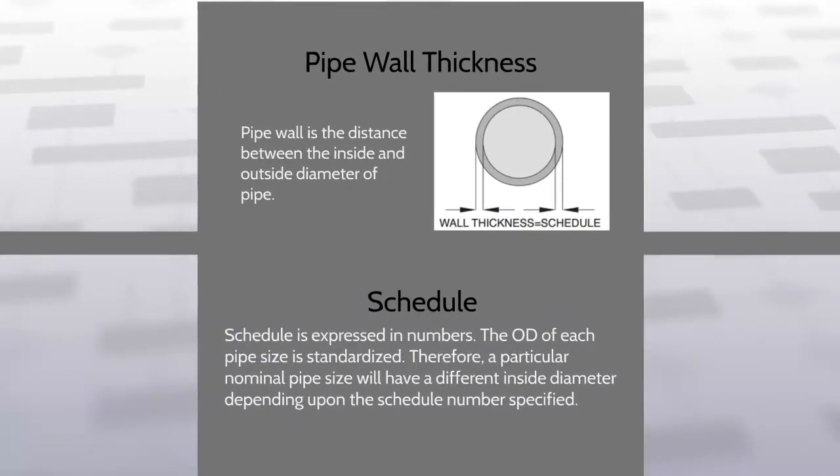Pipe wall thickness is the distance between the inside and outside diameter of the pipe, different than the schedule, which is expressed in numbers. The OD of each pipe size is standardized. Therefore, a particular nominal pipe size will have a different inside diameter depending upon the schedule number specified.